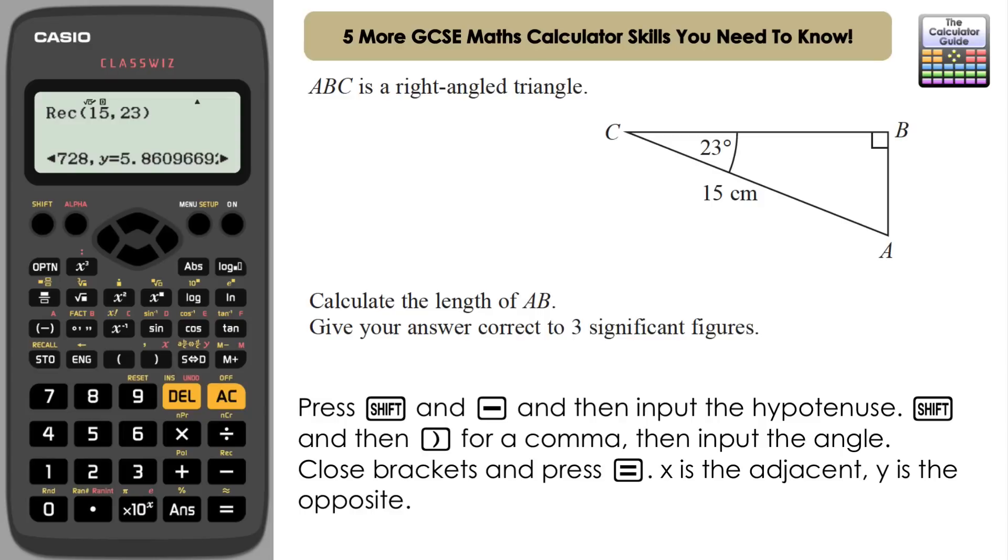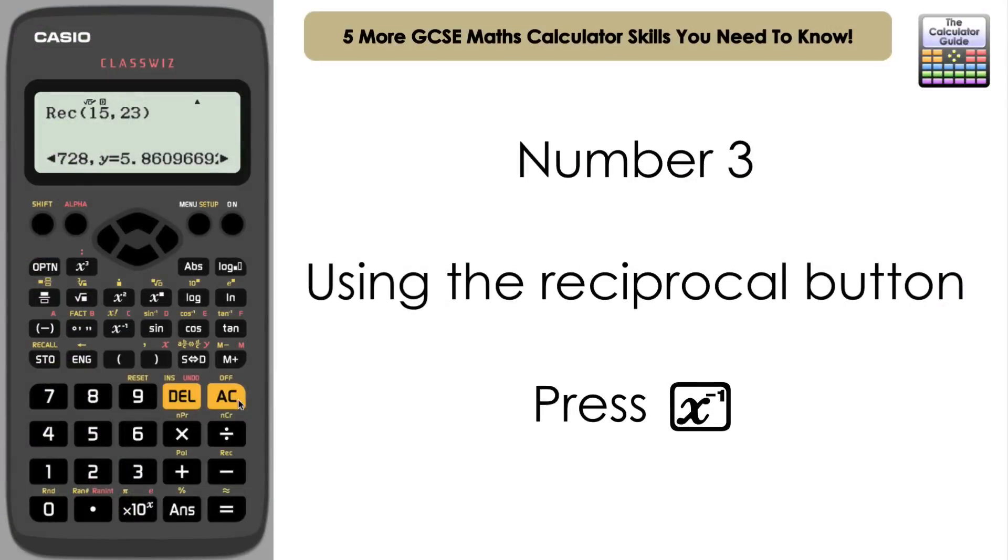Again, just checking the language. It said calculate the length of AB, that's what we've done, so it's perfectly fine to use this. If it says show that or use trigonometry, then you need to be thinking of another way to be able to answer that, so in this case using sine.